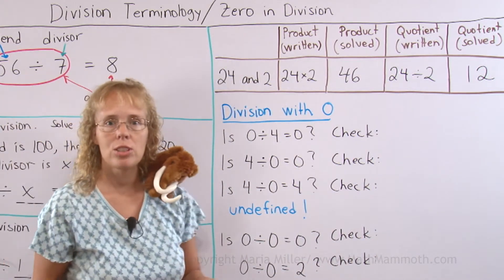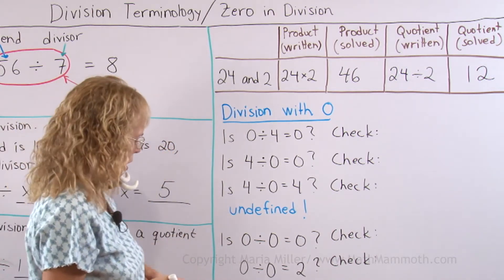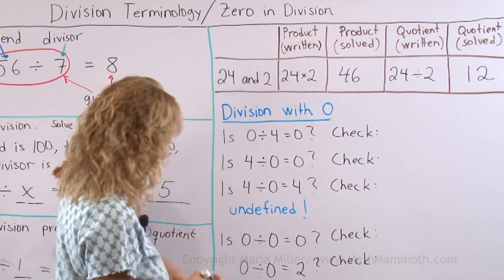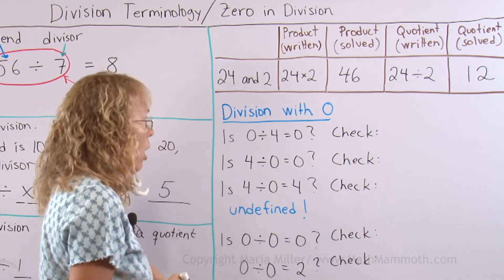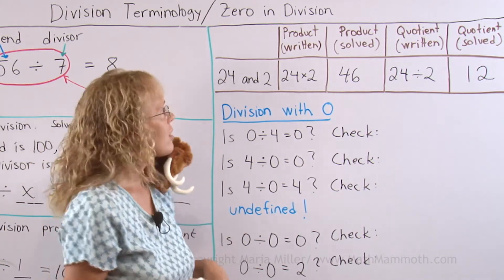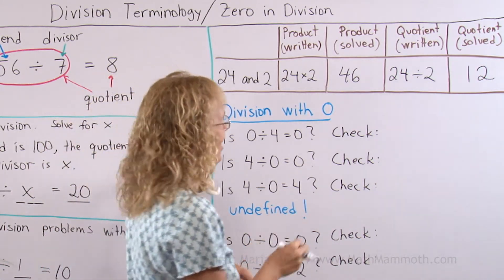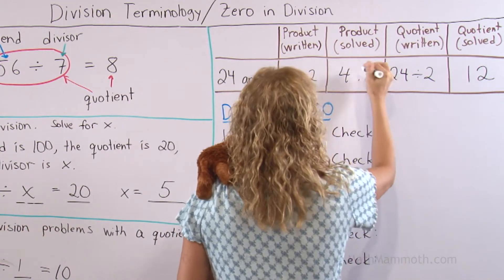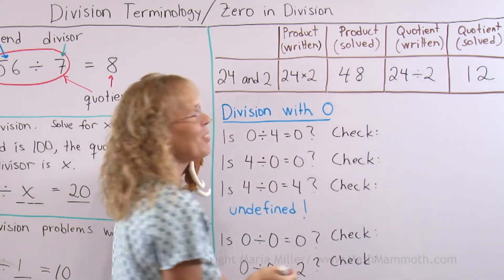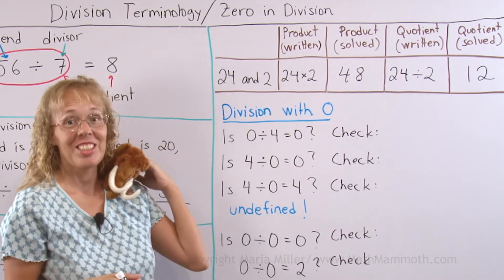Next we are gonna look at division with 0. Matthew, why are you tickling me? Oh, there's an error! Ah, I see it now. 48. Thank you, Matthew. He's a good guy.